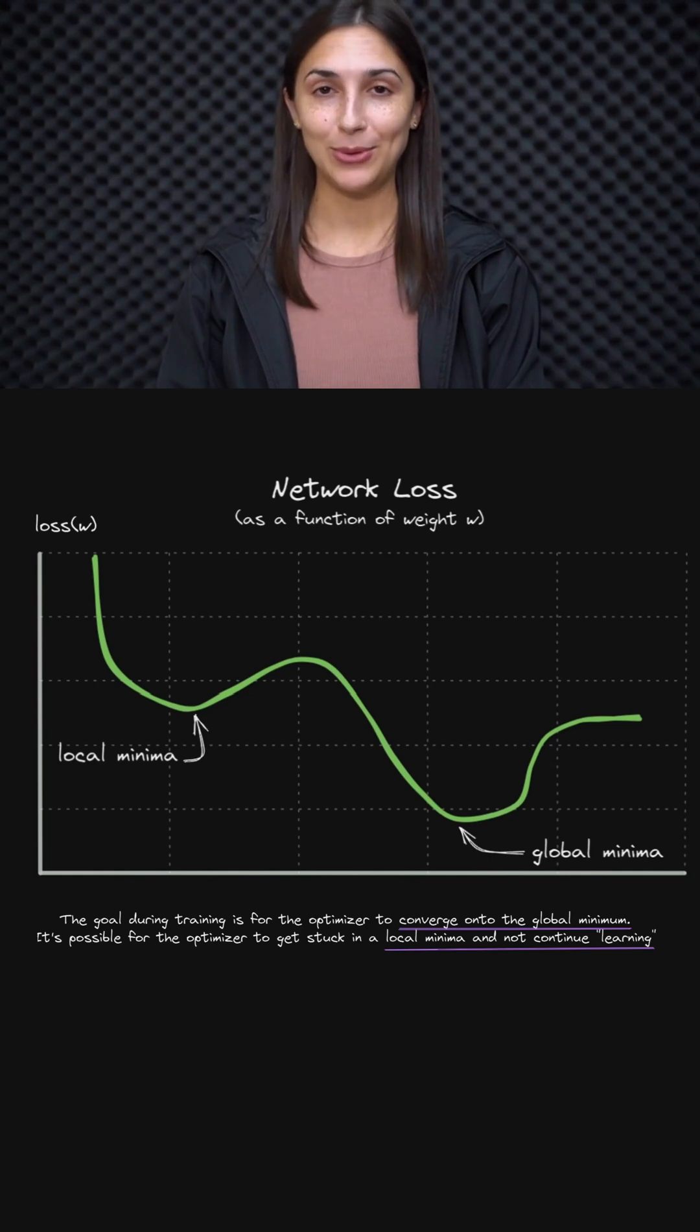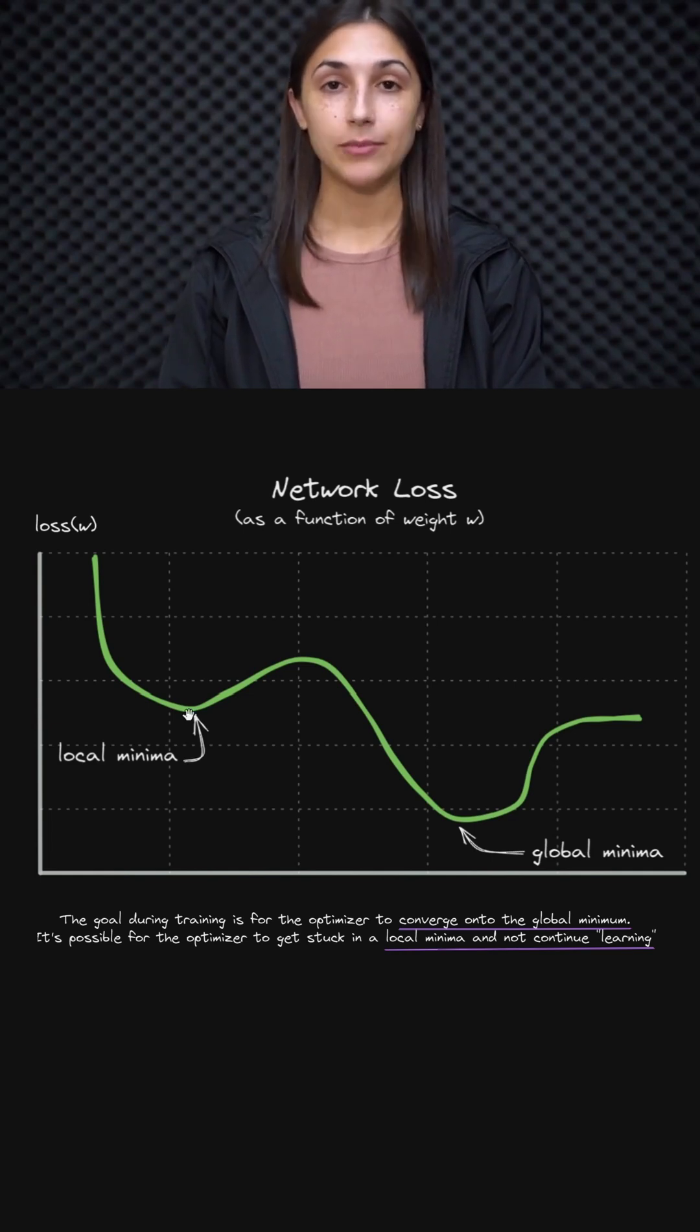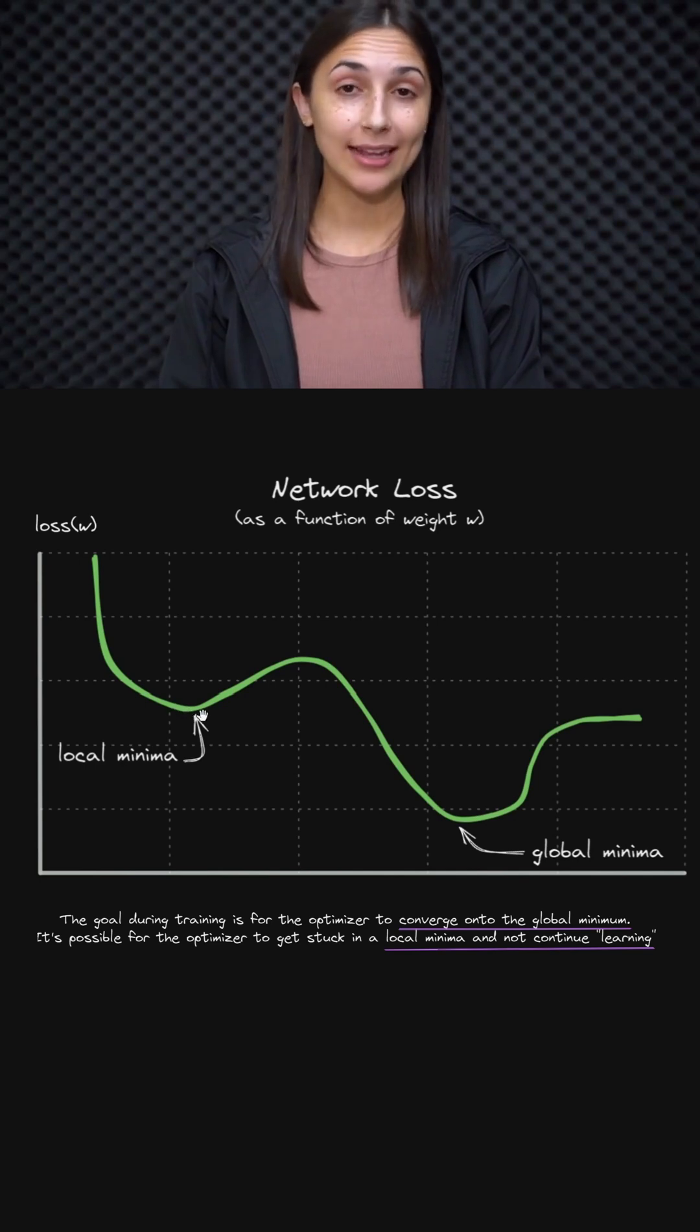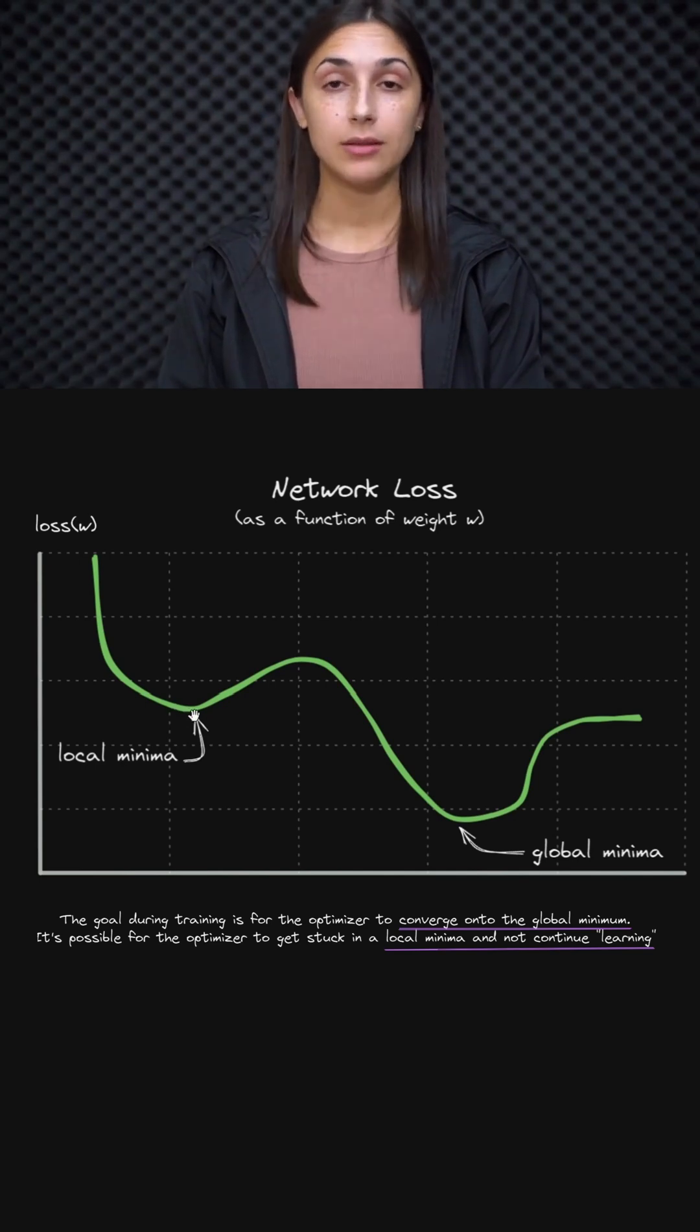I will leave that up to you to come up with a visual that more accurately represents that relationship. So now we can understand how the network can get stuck in a local minima during the training process. The choice of which optimization algorithm we use during training can help prevent this situation from happening.